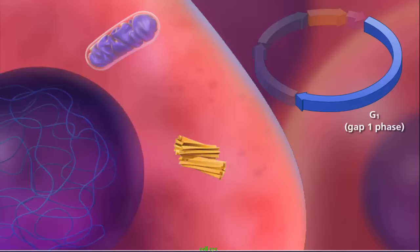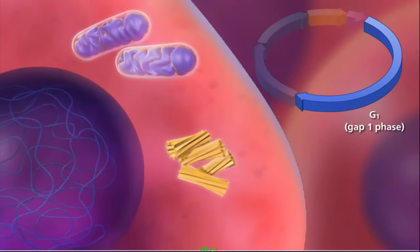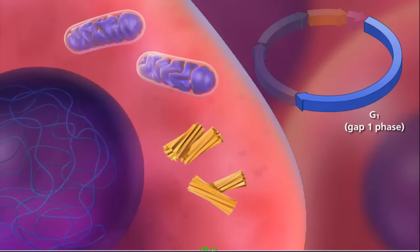During G1, or GAP1 phase, all the organelles and cytoplasmic components, including the centrioles in animal cells, replicate.